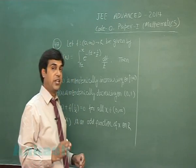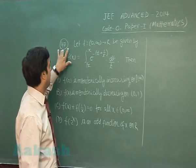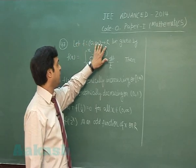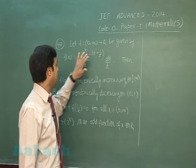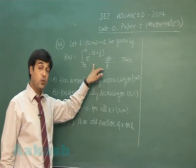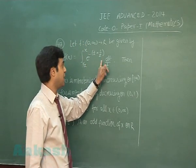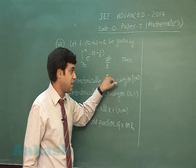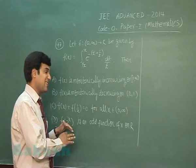Okay, let's go for the next question that is 47. If f from (0,∞) to R be given by f(x) = integral 1/x to x [e^(-(t + 1/t))] dt/t,